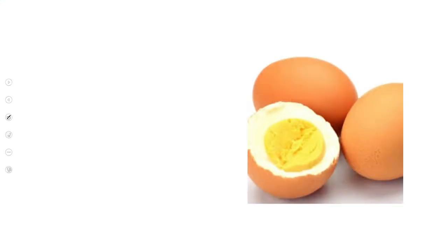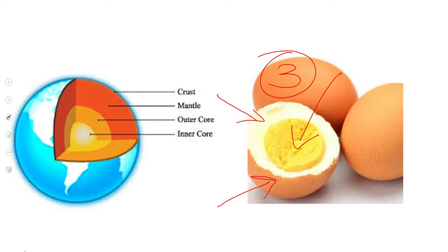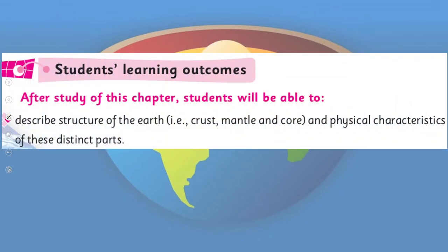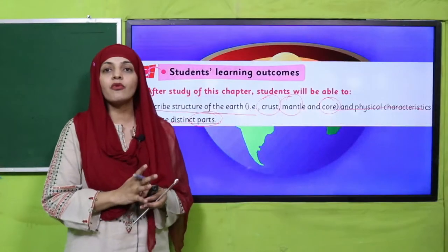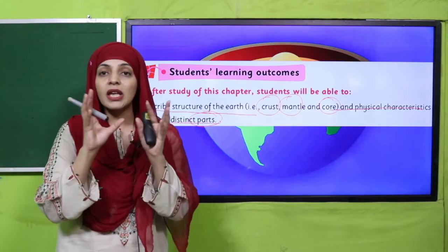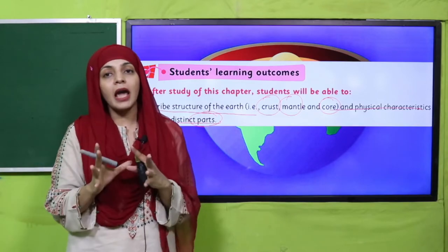My dear students, here you can see in the picture: the egg's first layer is the shell, then the white part, and then the yellow part — three layers. Now here is the earth. The top most layer, the blue and green layer that you see, is the crust. Then comes the mantle, and then comes the core. The core and mantle can be further divided, but right now the earth also has three layers.